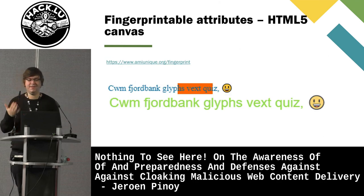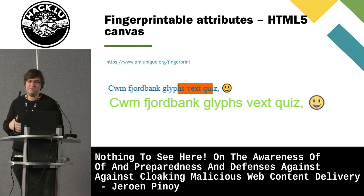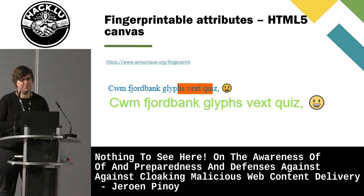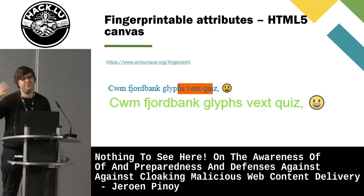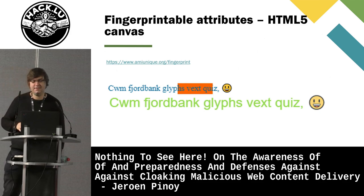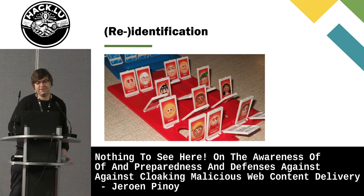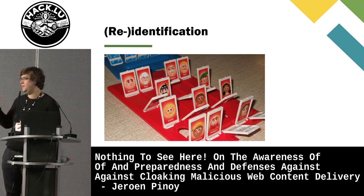One particularly interesting example is the HTML5 canvas. Research published in 2012 showed you could use the HTML5 API to create a picture, collect this canvas image from the browser, send it to the server, and use it to uniquely identify you. The image created is fairly unique. The goal of browser fingerprinting is to identify a browser, user, or system by collecting a bunch of attributes — essentially playing a game of Guess Who.